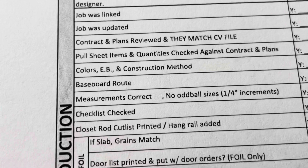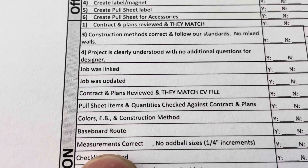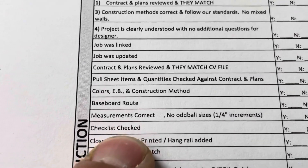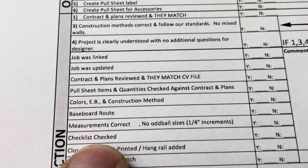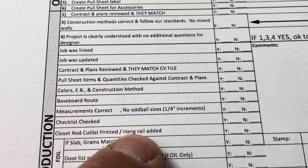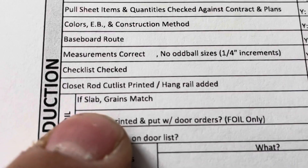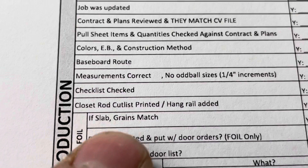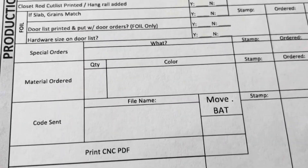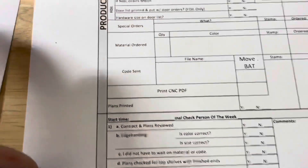Now we're looking at the cabinet vision file. There's a baseboard route, the measurements are correct, no oddball sizes — similar to what was on the designer checklist. We have an additional checklist for the production guy to go through on the design. The closet rod cut list is printed with a hanging rail cut list added. When we're doing foil or slab doors in-house, we green match them — it's just a button in cabinet vision. The door list is printed out, and we put the material, quantity, and code. That's our whole process before it leaves the shop.